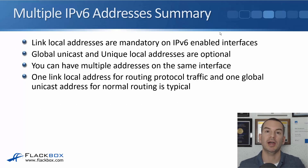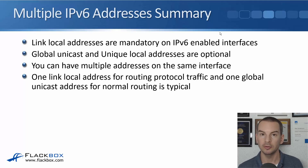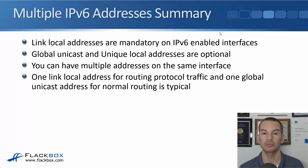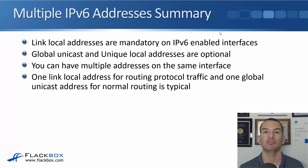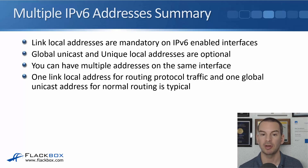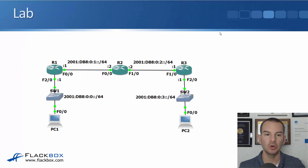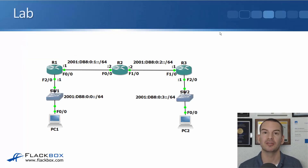To summarize multiple IPv6 addresses: Link Local addresses are mandatory on IPv6-enabled interfaces. Global unicast and unique local addresses are optional. You can have multiple addresses on the same interface. Typically, one Link Local address is used for routing protocol traffic and one global unicast address is used for normal routing.